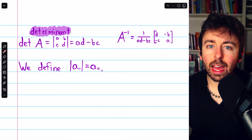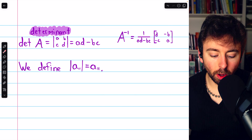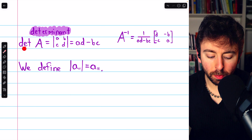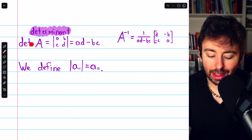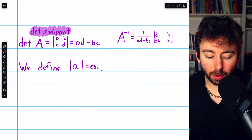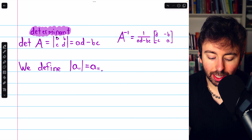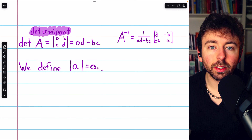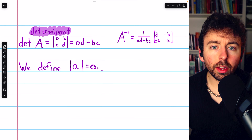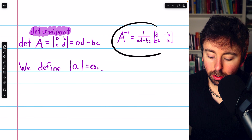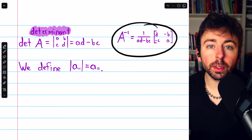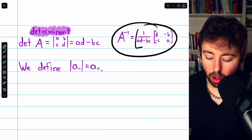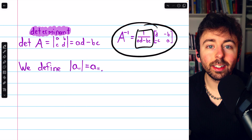We've previously covered how to calculate the determinant of a 2x2 matrix, denoted like this or this. It's simply AD minus BC — we think of it like the difference of the products of the diagonals. We also saw how the inverse of an invertible 2x2 matrix involves the determinant.